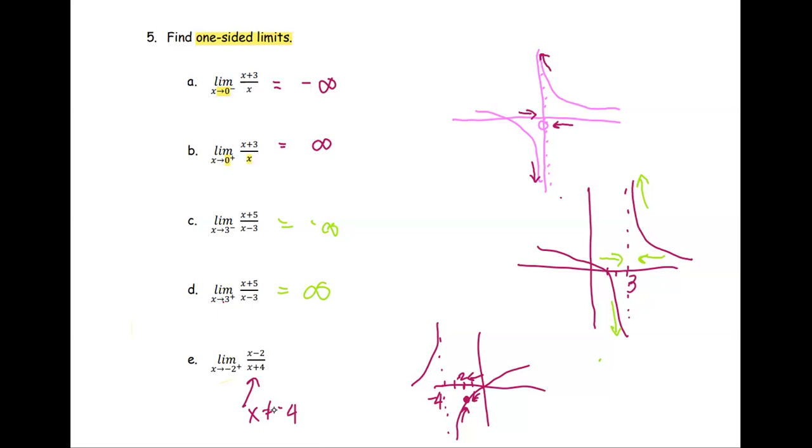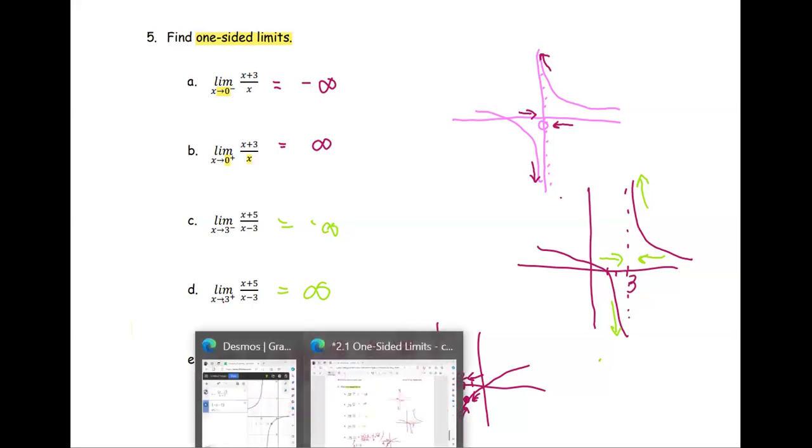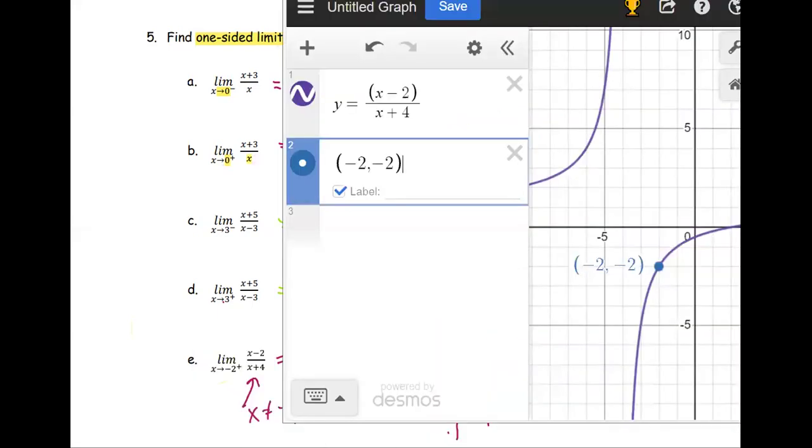The left hand limit and the right hand limit approach to the same value. And basically, we can compute directly. Negative 2 minus 2 divided by negative 2 plus 4. We get negative 4 divided by positive 2. That turns out to be negative 2. That's confirmed by the graph that we plot by Desmos.